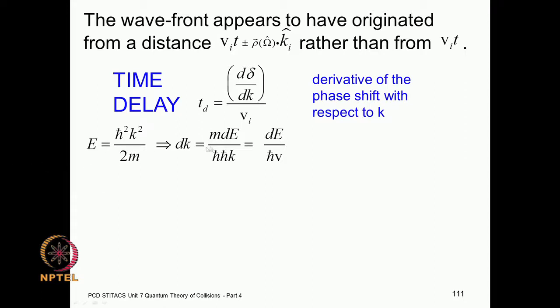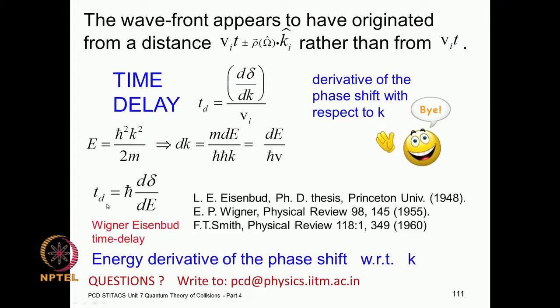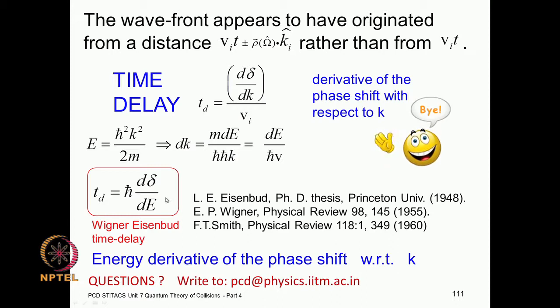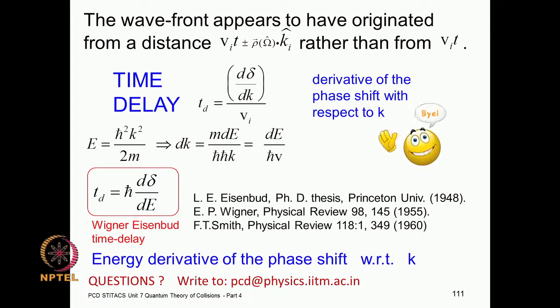The time delay is dδ/dE (in units of ℏ), and this analysis originates in the work of Eisenbud and Wigner; Smith also has important work on this. With that I conclude today's class. In the next class I will summarize and show some applications of the various topics we have covered, which will pretty much conclude the course.